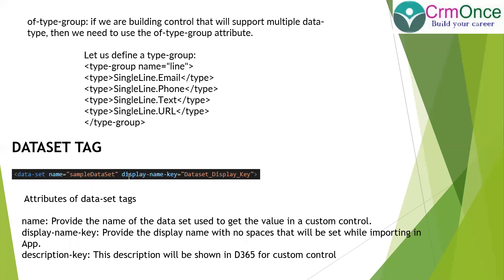If you want to use of-type as a group, you can mention a group type name and group all attributes as a single line of text. The dataset tag is used when you want to display something in a grid - when you are building grid-type controls. Currently in my manifest file, the dataset tag won't appear because I created the project with the field template type. Whenever you choose a dataset control, this tag will be displayed. In the dataset tag you provide the name, display name, and description of the dataset.